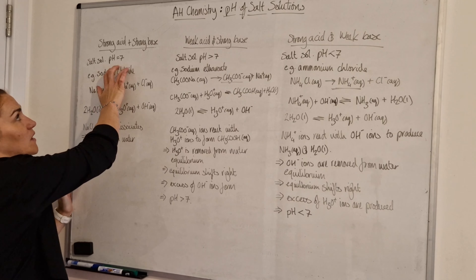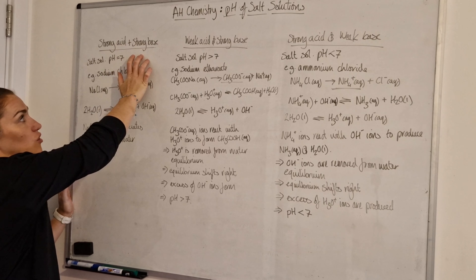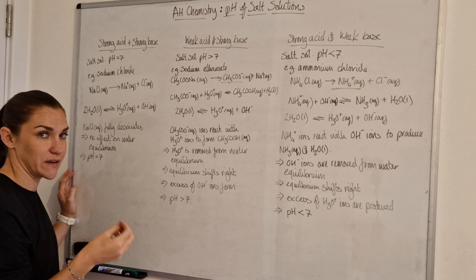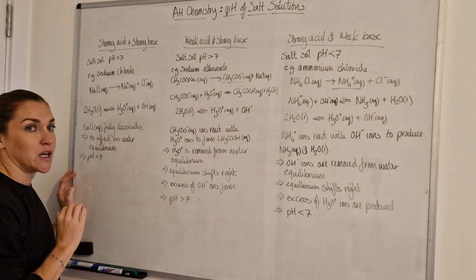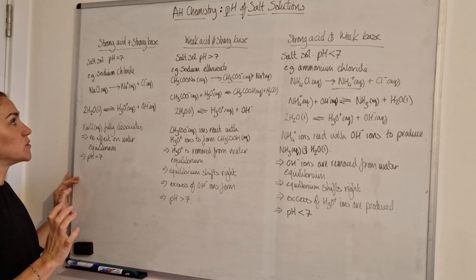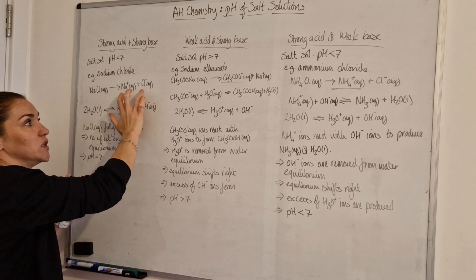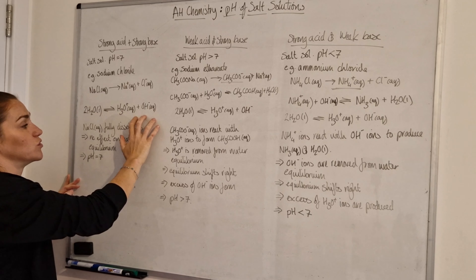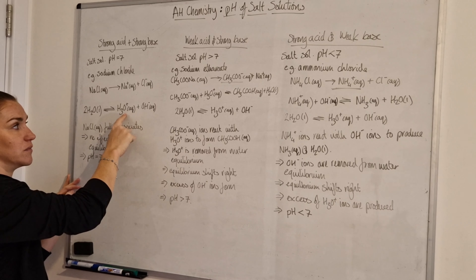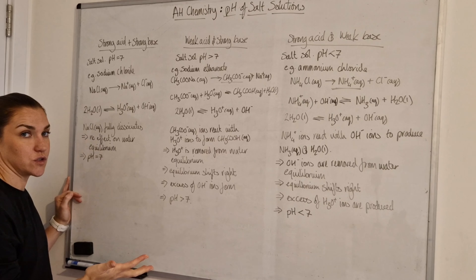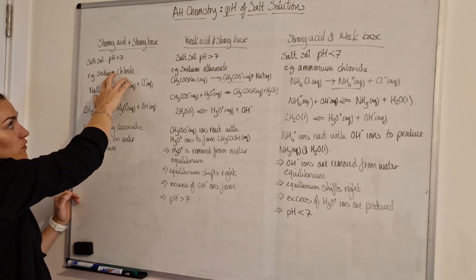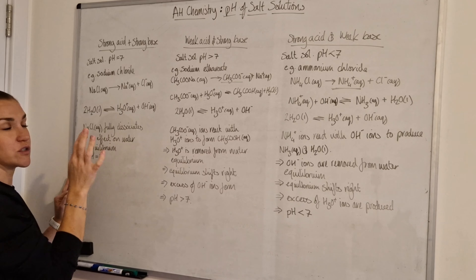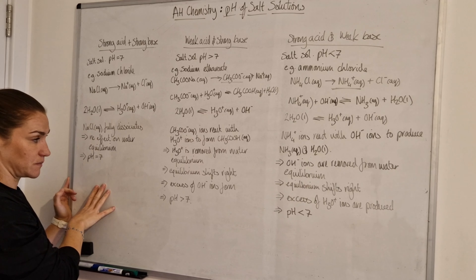When you have a salt made with a strong acid and a strong base, like sodium chloride — made from sodium hydroxide and hydrochloric acid — the pH of the salt solution will be seven. This is because the ions fully dissociate and float around as free ions. They don't form any equilibriums of their own, so there's no disruption to the water equilibrium, giving equal concentrations of hydronium and hydroxide ions, resulting in pH 7.